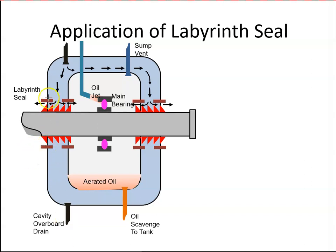Here we have this area — a labyrinth type seal. A labyrinth seal is comprised of a series of fins or knife edges. On initial running of the engine, the fins lightly rub against the lining, cutting into it and giving minimum clearance between the fins and the lining.